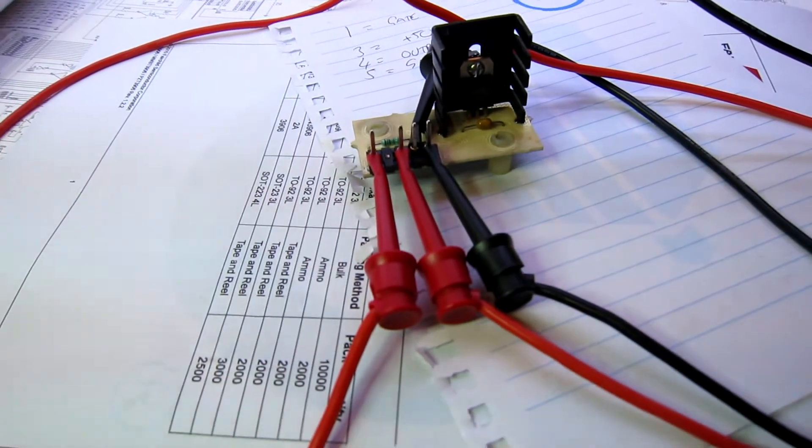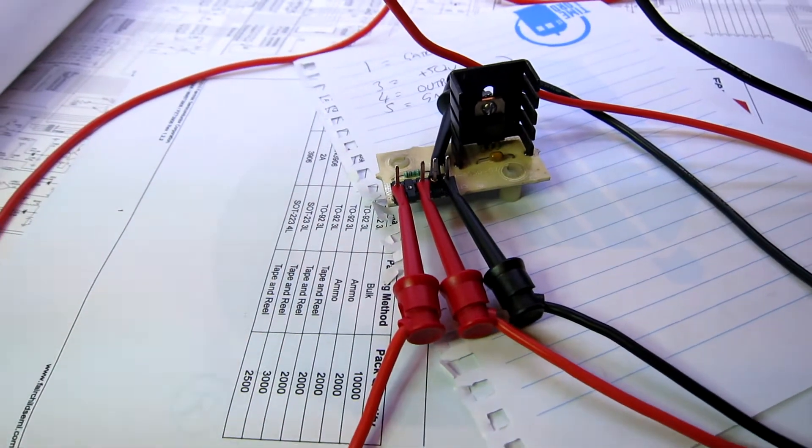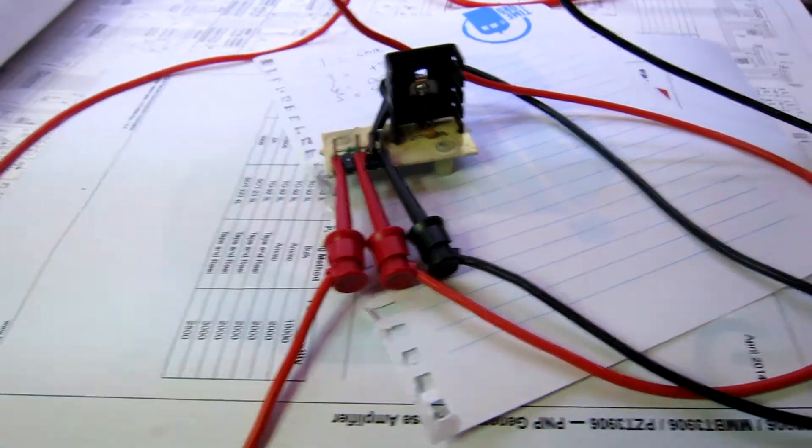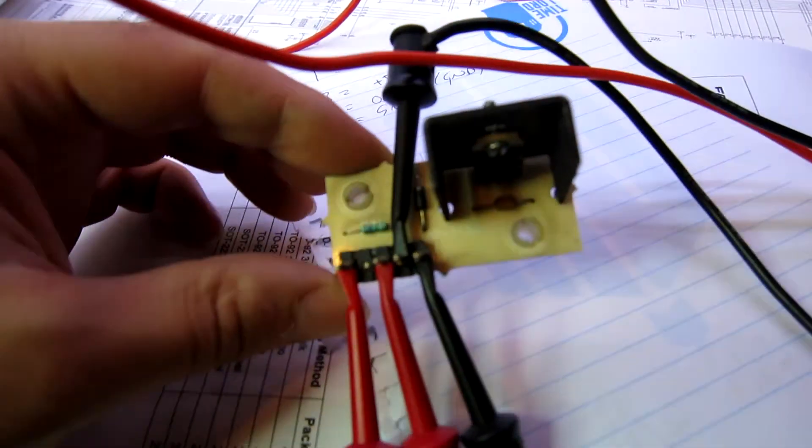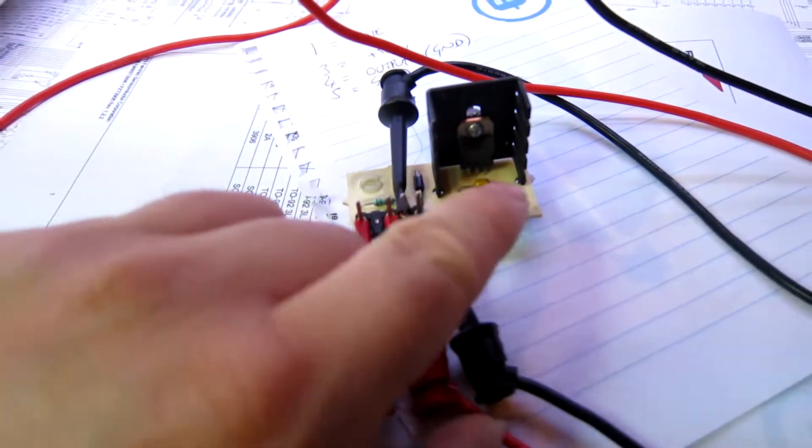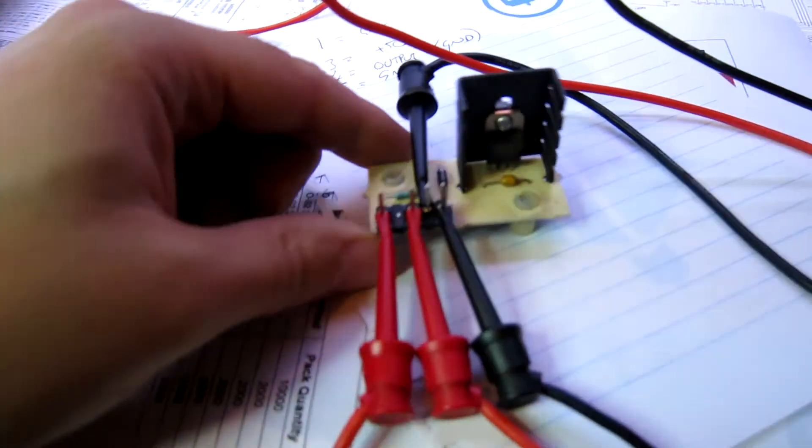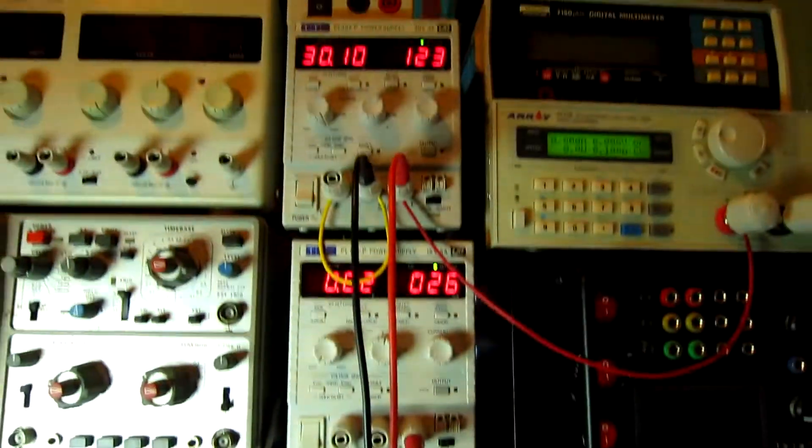Hello everybody, today I'm going to show you how to test the Sega moon magnet PCB. This is the moon magnet PCB here, which is basically just a MOSFET and control circuitry. We need two channels of power supply and a load tester.